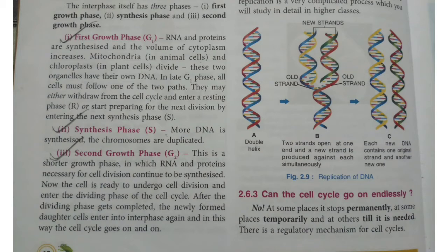Second is the synthesis phase, in which more DNA is synthesized and the chromosomes are duplicated. Third is the second growth phase, G2 — a shorter growth phase in which RNA and proteins necessary for cell division continue to be synthesized. The cell is then ready to undergo cell division and enter the dividing phase. After the dividing phase is completed, the newly formed daughter cells enter into interphase again, and in this way the cell cycle goes on and on.